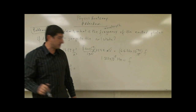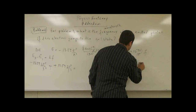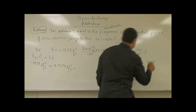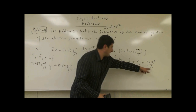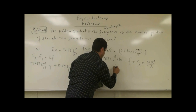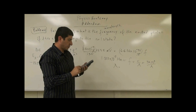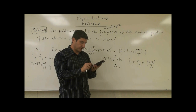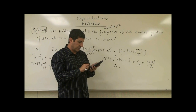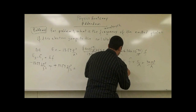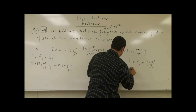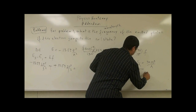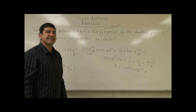If we want the answer in terms of wavelength, we use f equals the speed of light over wavelength: 3 times 10 to the 8 over lambda. Cross-multiplying gives wavelength equals 1.6455 times 10 to the negative 10 meters.